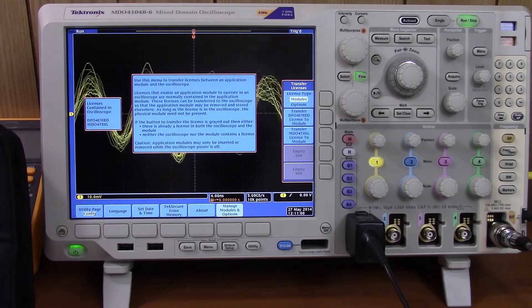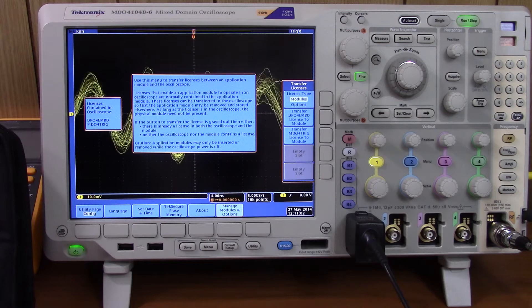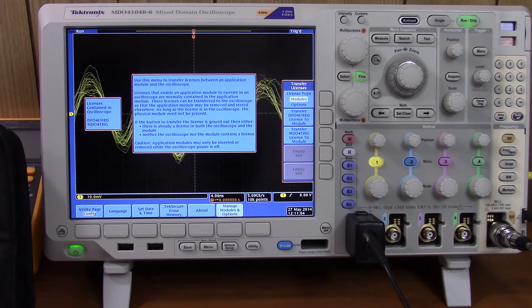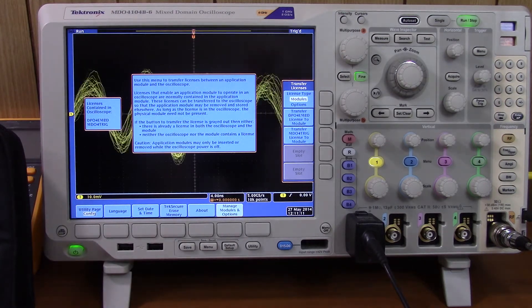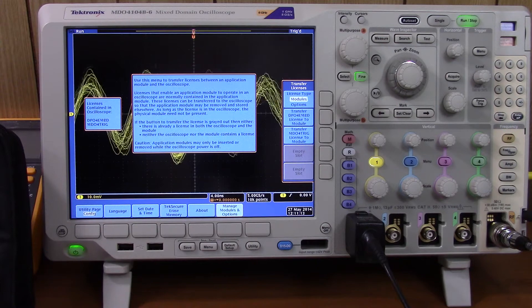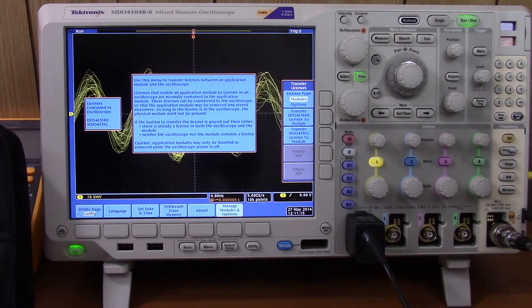Now, if I would shut the oscilloscope down and remove those option modules, the options will still be active. Now you might think, okay, well, it's easy then. In that case, I just buy one module and I install this on five oscilloscopes and I got this option on five different oscilloscopes and save the money. No, that doesn't work either. You won't outsmart Tektronix like that.